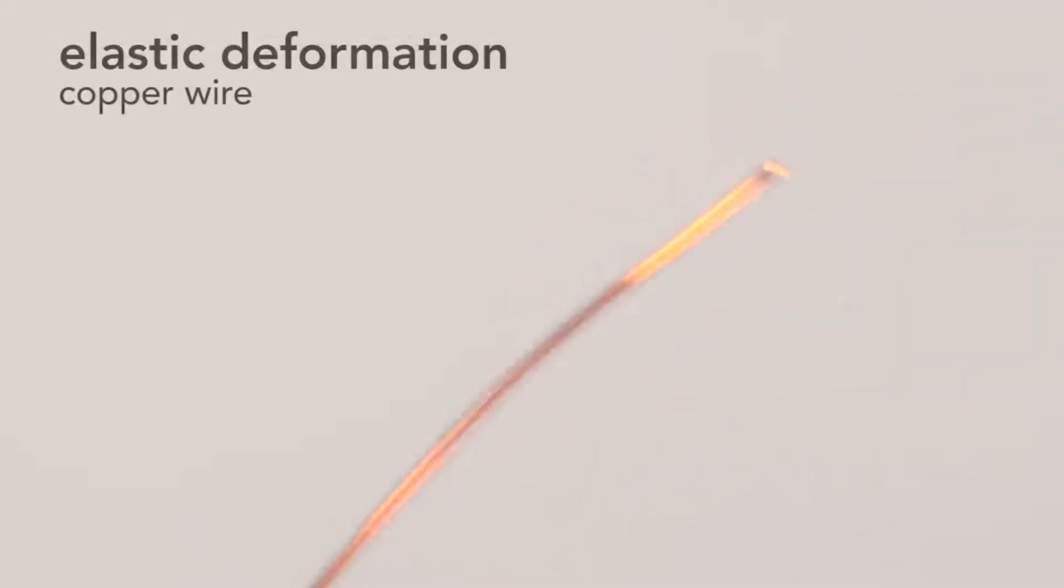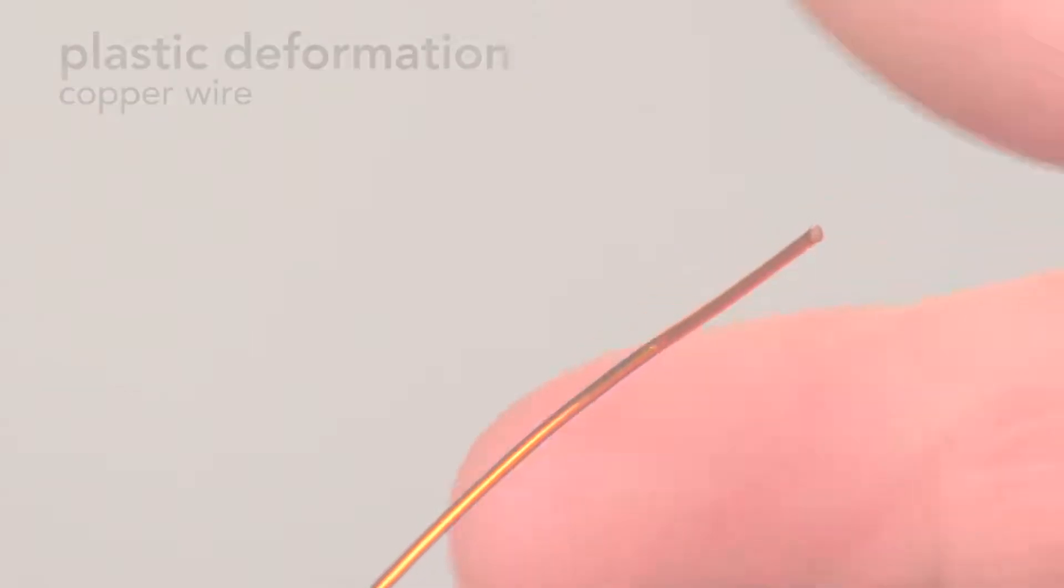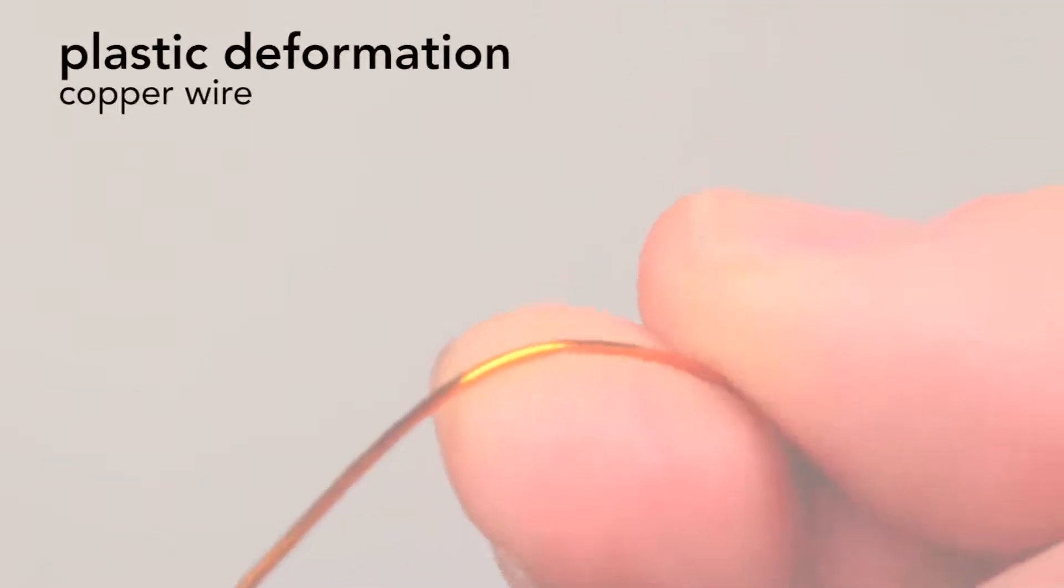Compare nitinol wire to a piece of copper wire. If I move the copper wire a bit and let it go, it returns to its original position. That's an elastic deformation. But if I go too far, it doesn't return to its original shape. That's plastic deformation.